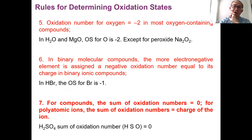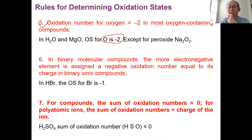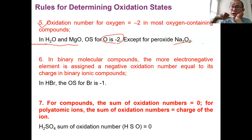Rule number five is similar: the oxidation number for oxygen in an oxygen-containing compound is mostly -2. Hydrogen is +1, oxygen is -2. For example, in water or magnesium oxide, the oxidation number for oxygen is -2. The exception is peroxide — if you have O₂²⁻ together as a peroxide, it's not -2. But the rule here simply is: hydrogen +1, oxygen -2 in most compounds containing hydrogen or oxygen, respectively.